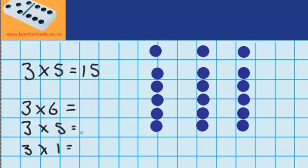Now I know the answer to three times five is fifteen. I know the answer to three times one is three. So if I combine those together, my answer is eighteen. So three times six equals eighteen.